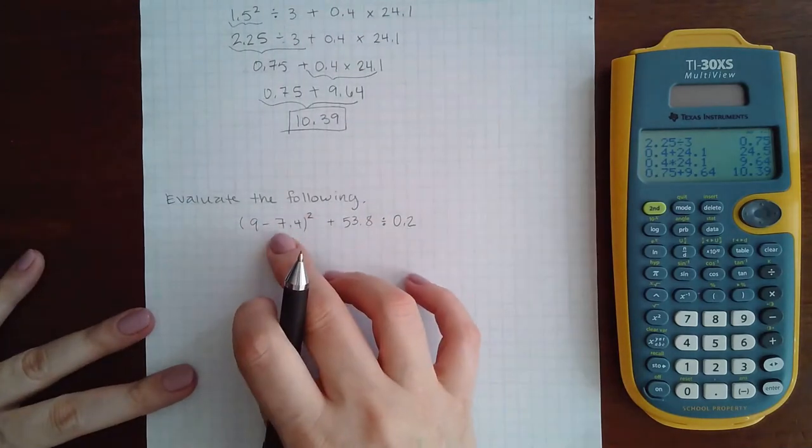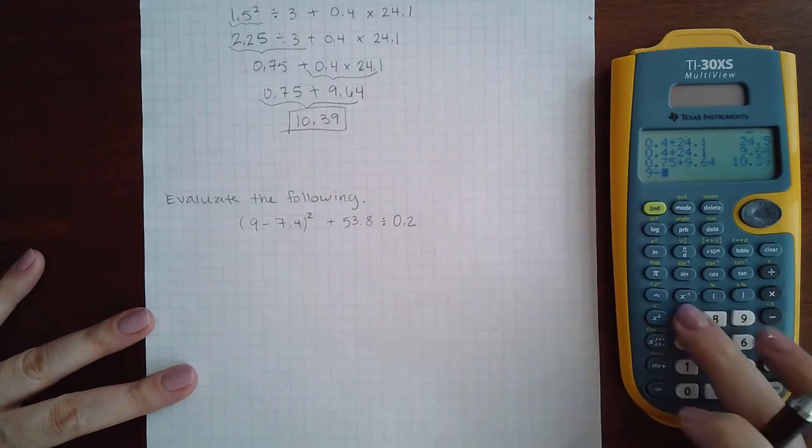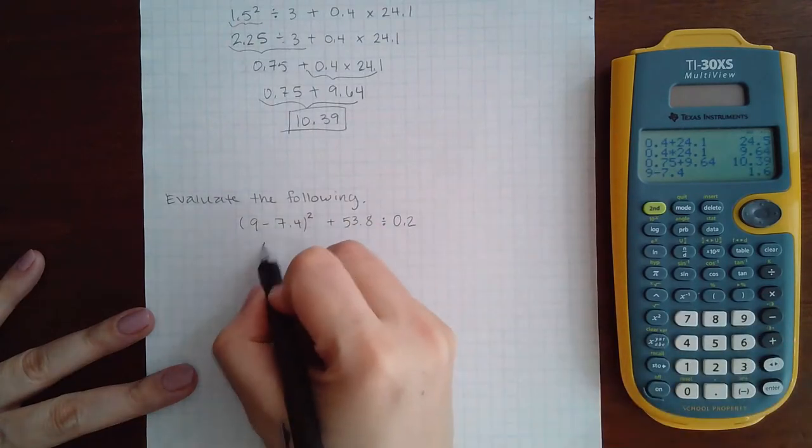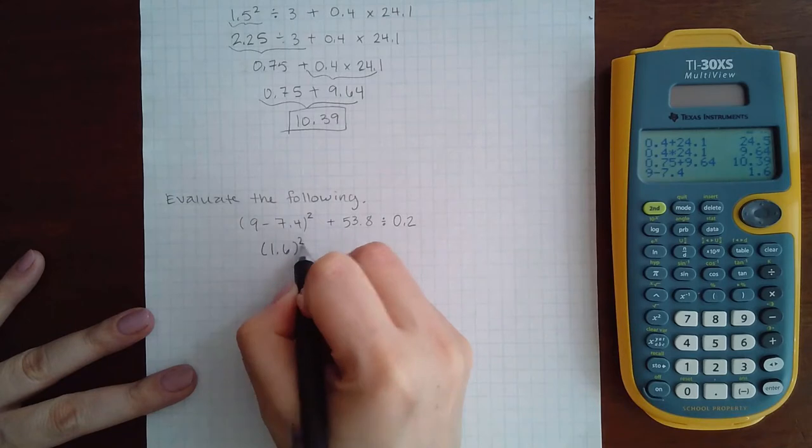So I do have to do what's inside the parentheses first, so I end up with 1.6 squared.